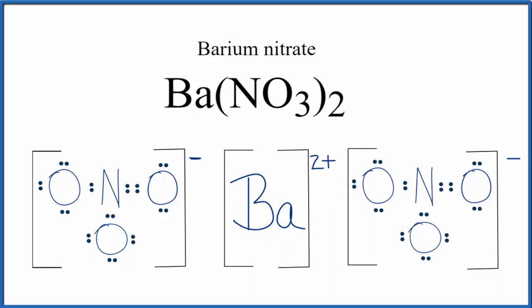What we've drawn is what's called a formula unit. Normally, barium nitrate is a crystal, and it's made up of a bunch of formula units in a regularly repeating pattern.